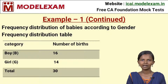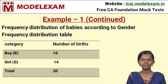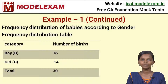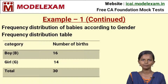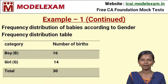Continuing Example 1: the frequency distribution table has two columns — category and number of births. There are two categories: boy and girl. There are 16 male births and 14 female births respectively. The total number of births in that week at the nursing home is 30. This is the frequency distribution table for the problem.